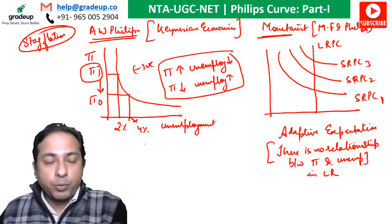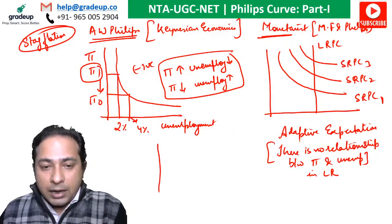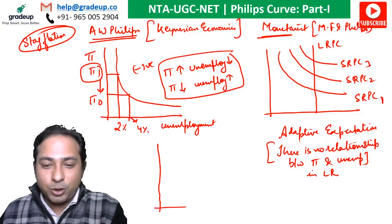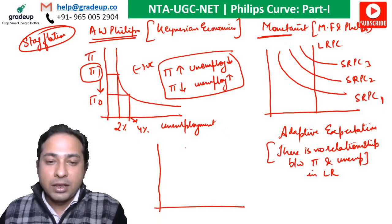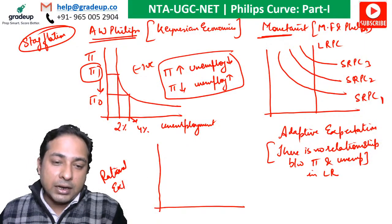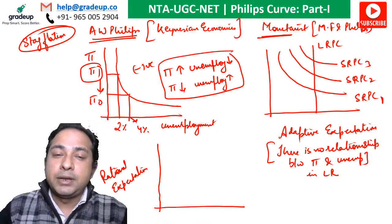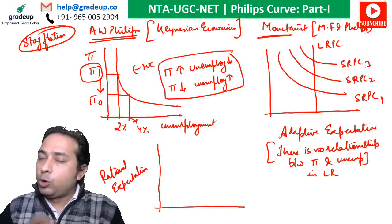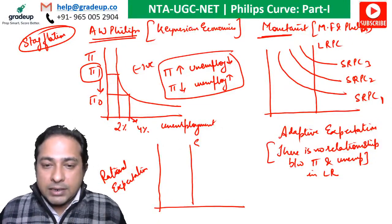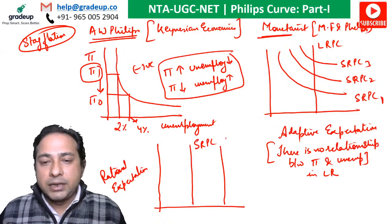The third version is promoted by rational expectations — and many students will not have seen this. The rational expectations school argues that there is no relationship between unemployment and inflation — neither in the short run nor in the long run. So their short-run Phillips curve is also vertical, and their long-run Phillips curve is also vertical.